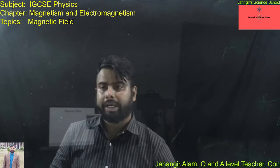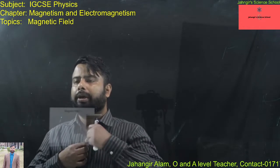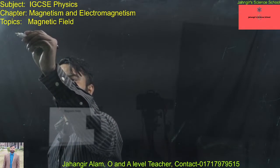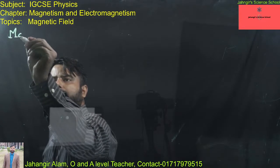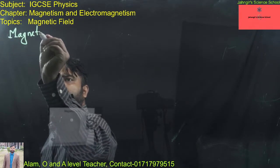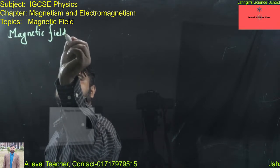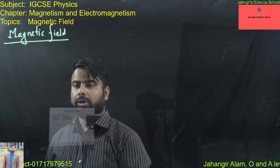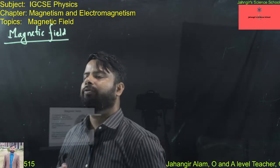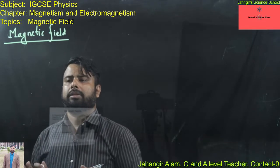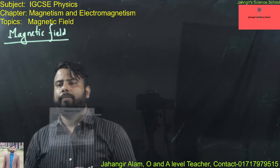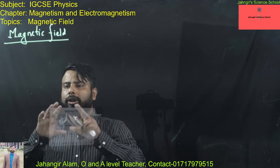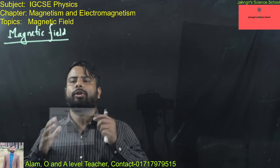Hello, dear students. Today I am going to discuss magnetic fields. A magnetic field is a space or region around a magnet up to which the force of influence exists. It is a volume of space around a magnet or current-carrying wire where magnetic force is exerted.